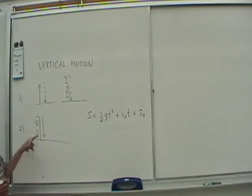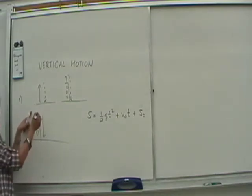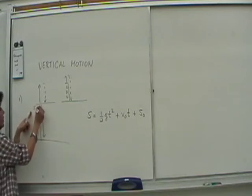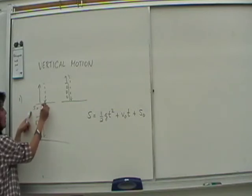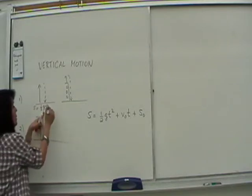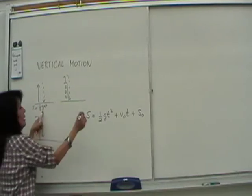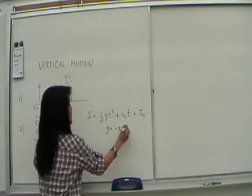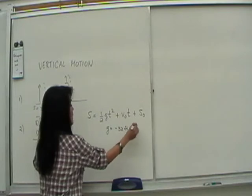So for the first one, let's say for this one where you were right at the ground, the equation for motion here will be S is equal to one half gt squared. G will be negative, always, it's a convention. So G is either negative 32 feet per second squared.